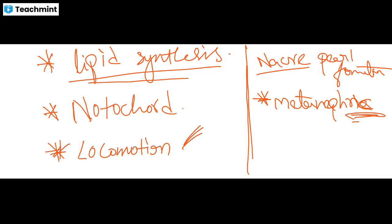The taxonomic hierarchy has seven obligate taxonomic categories: kingdom, phylum, class, order, family, genus, and species — seven levels. Domain is not included in the seven obligate taxonomic categories; it falls under a separate level above kingdom. So the answer to which one does not fall in the seven obligate taxonomic categories is domain.